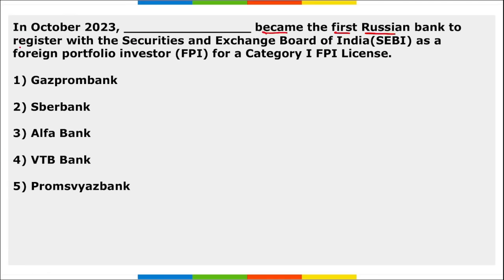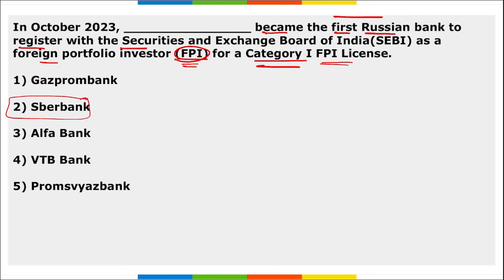Saber Bank became the first Russian bank to register with SEBI as a foreign portfolio investor for Category 1 FPI license. FPI involves investors purchasing foreign financial assets such as equities, bonds, derivatives, and mutual funds. Category 1 FPI license is only given to government-related foreign investors or regulated entities such as banks, sovereign wealth funds, investment trusts, pension funds, or asset management companies.